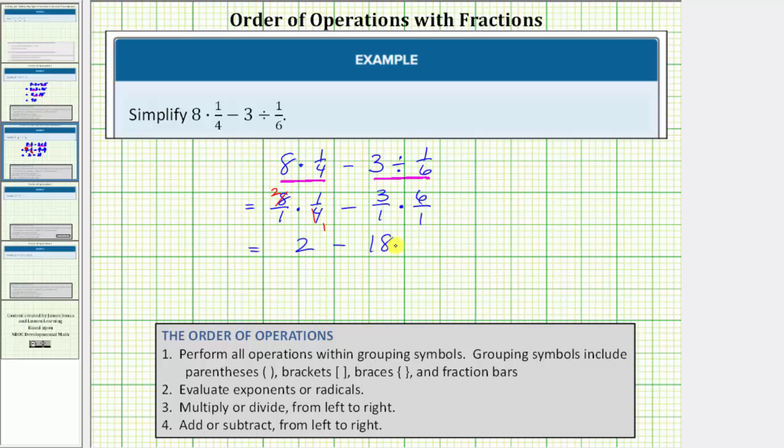We only have one operation left subtraction but if it's helpful we can write this subtraction as addition. Subtracting positive eighteen is the same as adding negative eighteen. So if it's helpful we can write this as two plus negative eighteen and two plus negative eighteen is equal to negative sixteen.